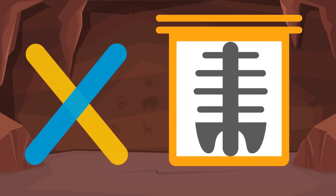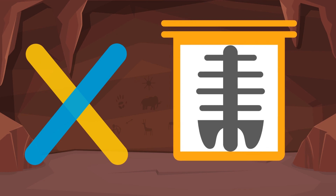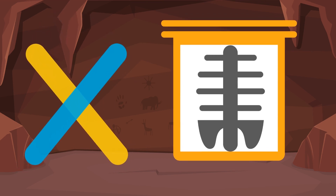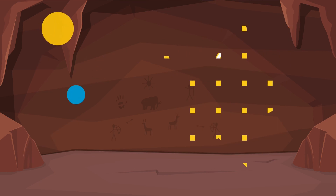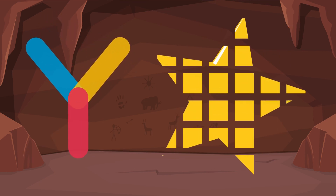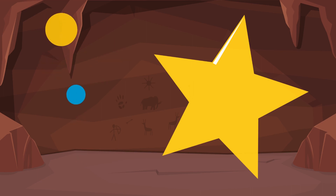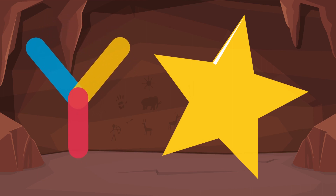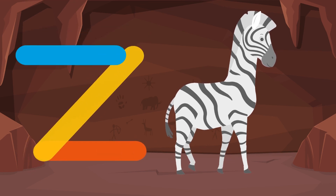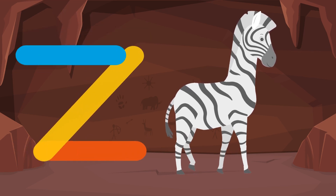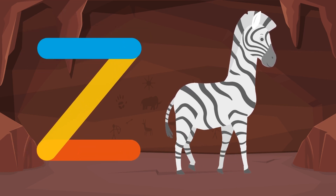X is for yellow. Z is for zebra. Thank you.